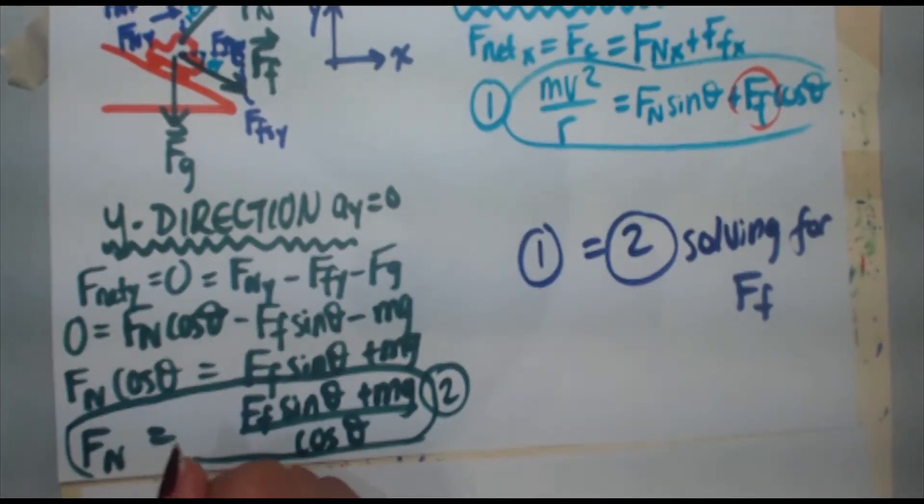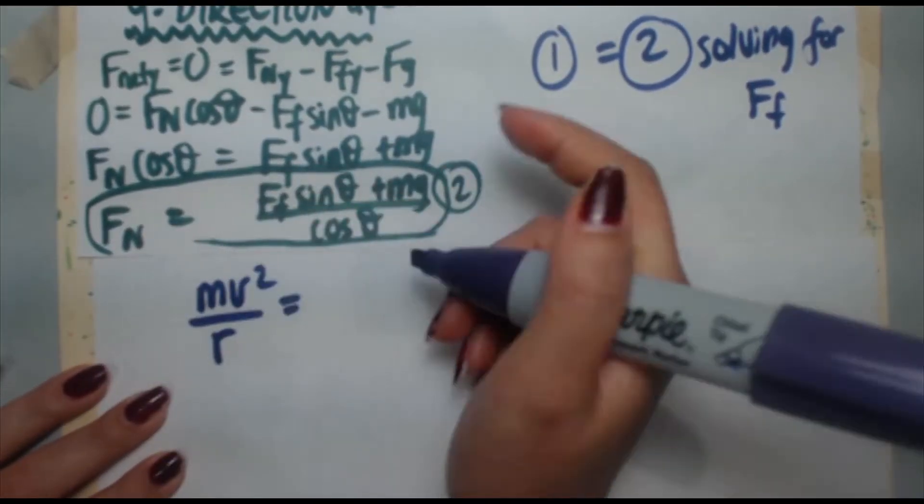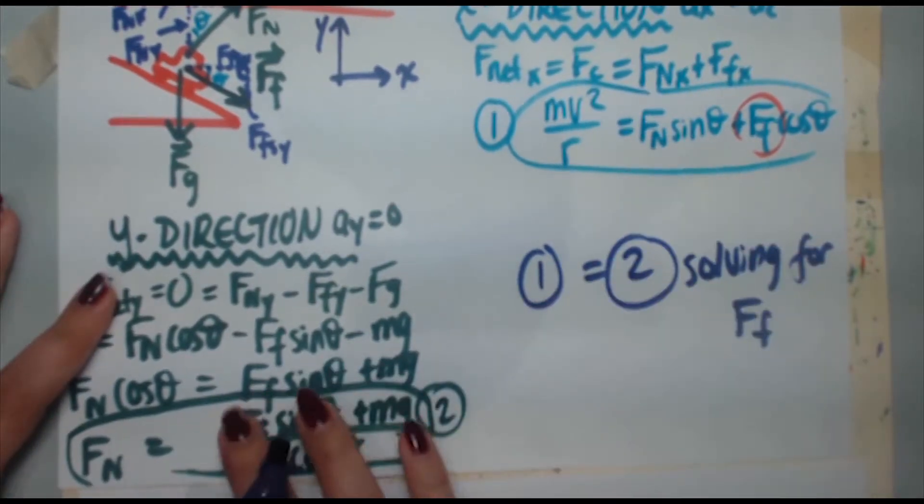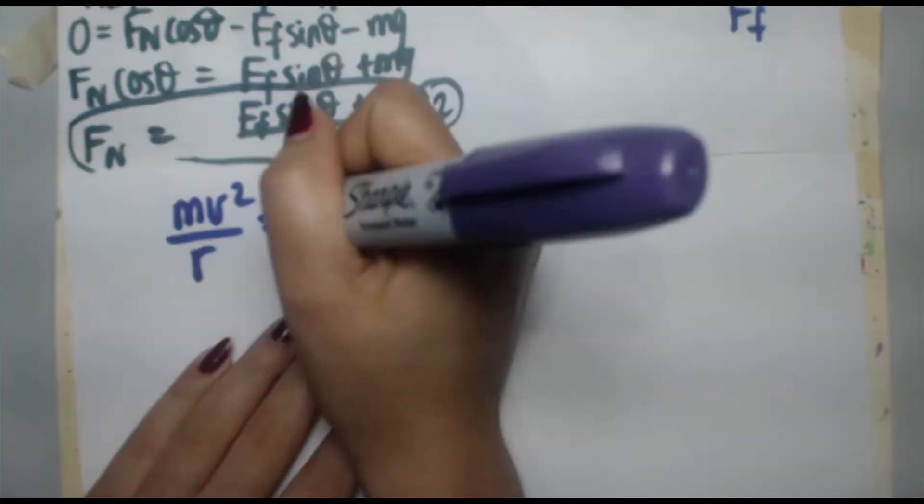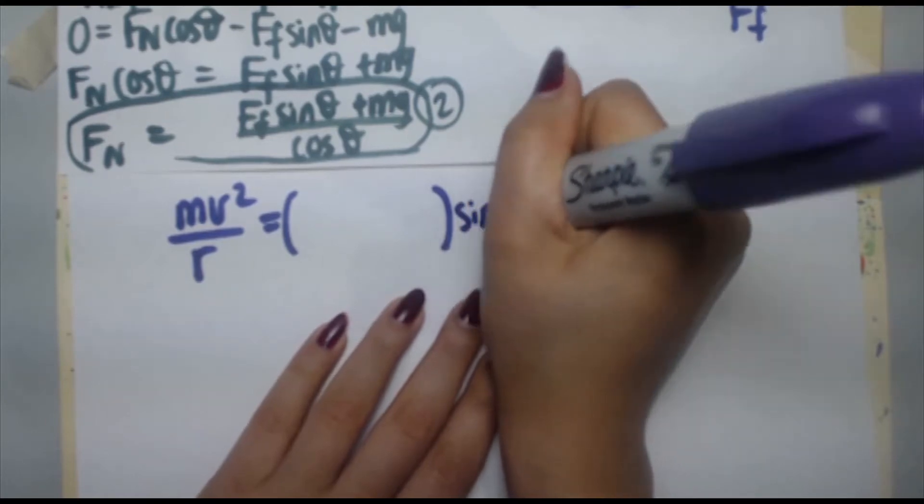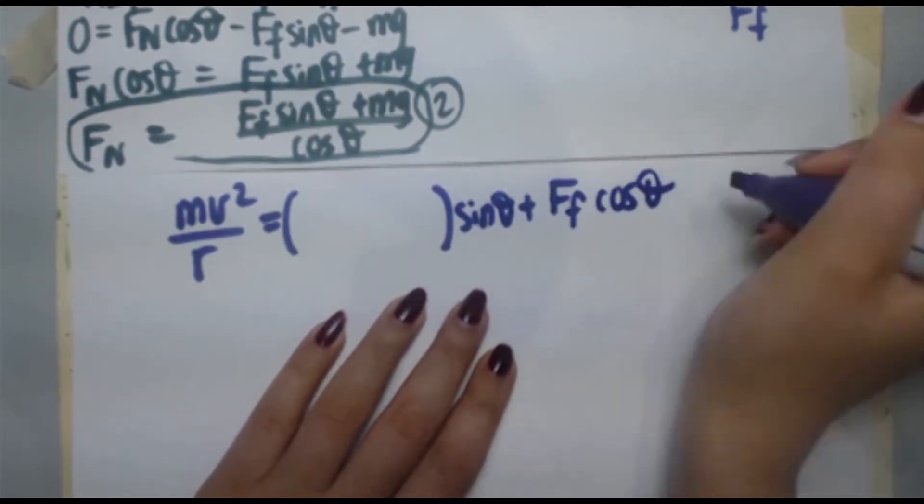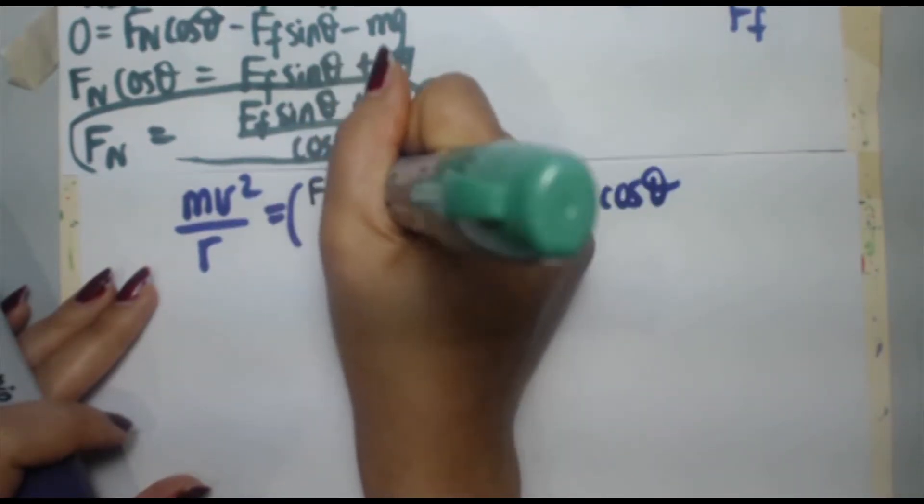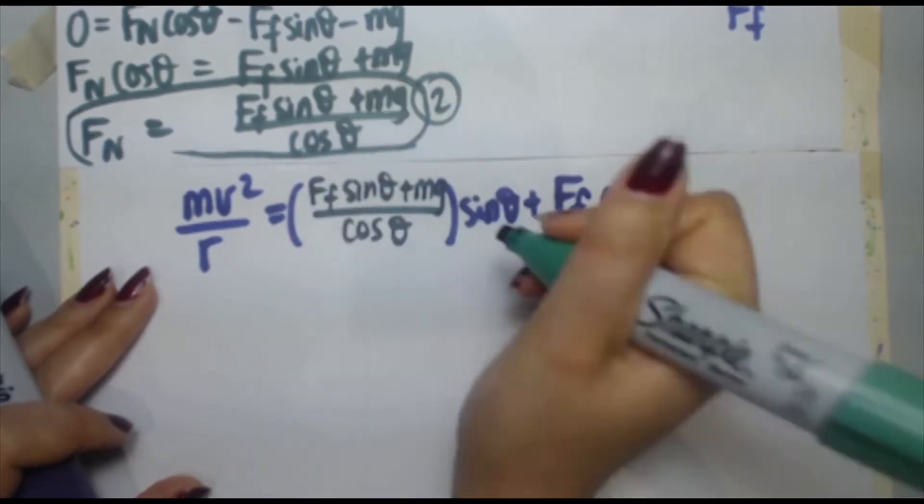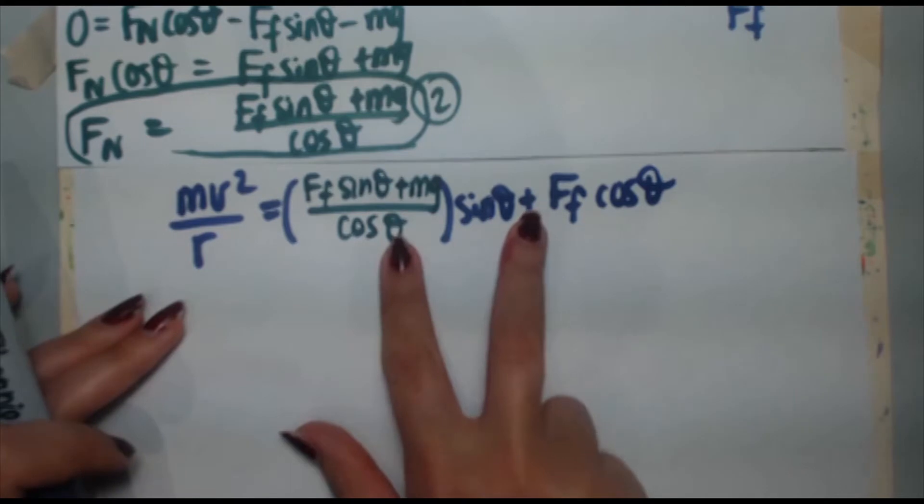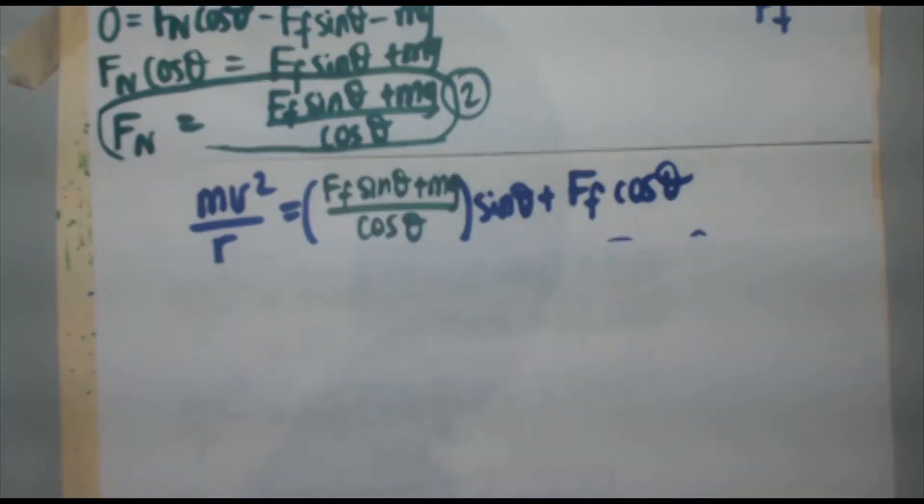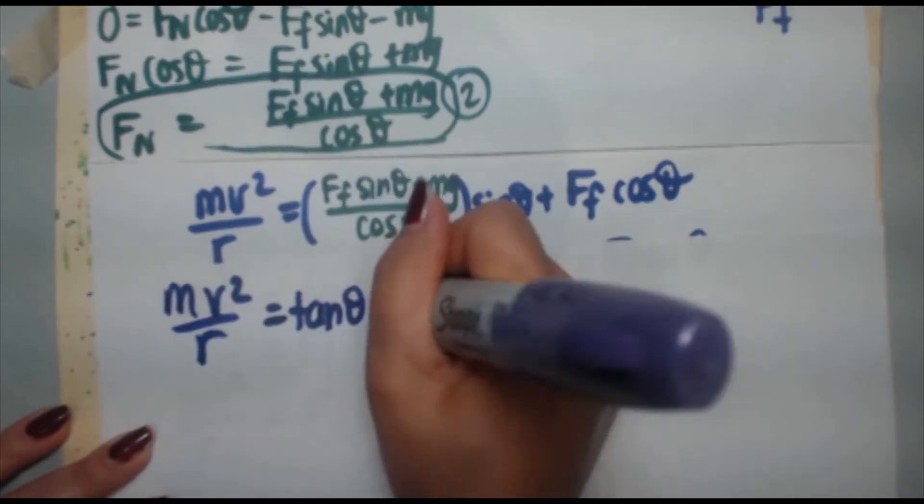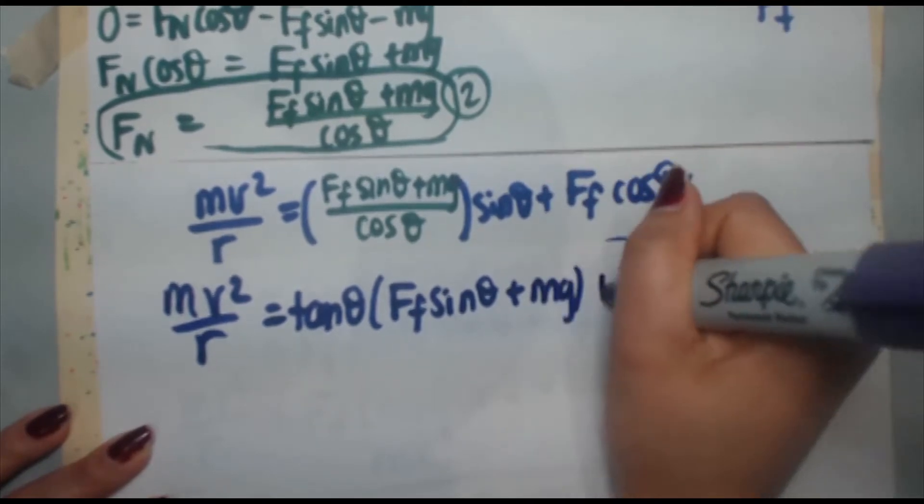Here we go. mv squared over r equals Fn sine theta. Replace Fn with a large set of brackets and inside those brackets, you're going to write this expression right here. So equals, plug in your normal force. We found that to be Ff sine theta plus mg divided by cos theta. So you could expand it to sine theta or you can recognize sine over cos, that's tangent. So let's expand that out now.